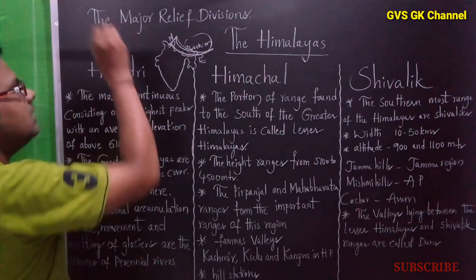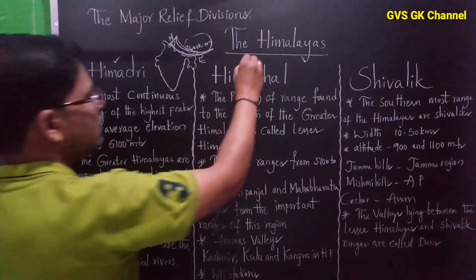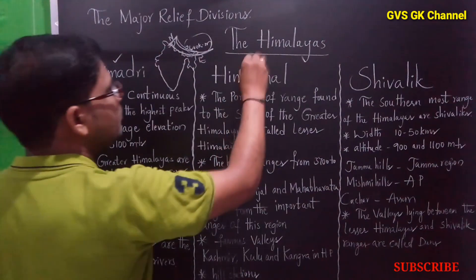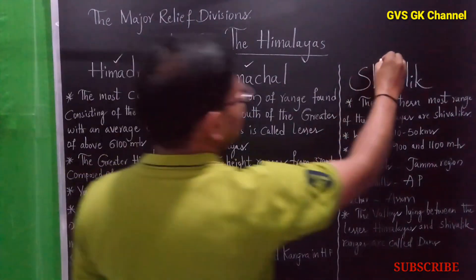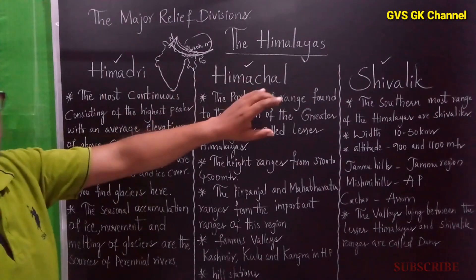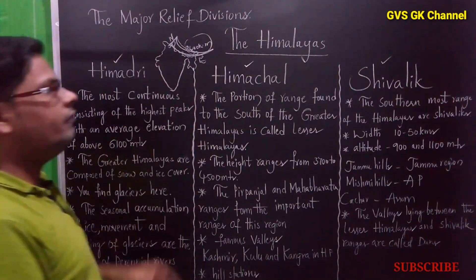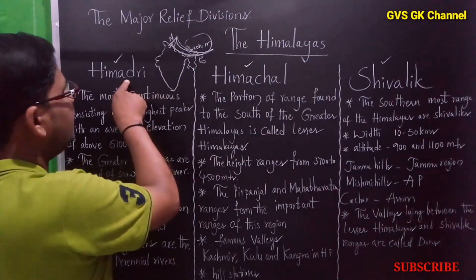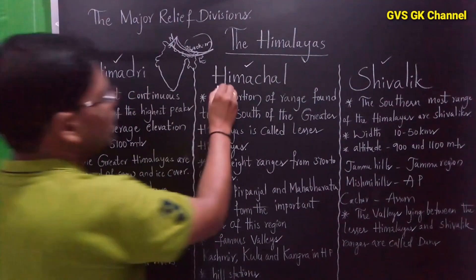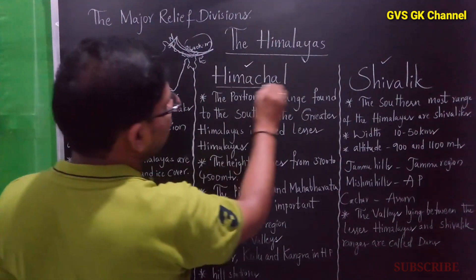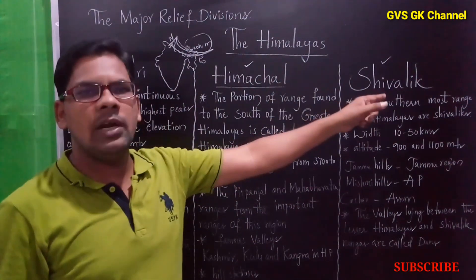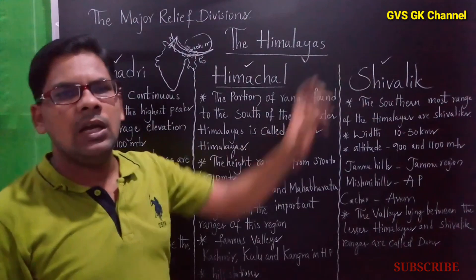What are the three ranges? The first one is Himadri, the second one is Himachal, and the third one is Shivalik. They are divided into these 3 important ranges, with different names: the Himadri range is also called the Greater Himalayas, the Himachal range is also called the Lesser Himalayas, and the Shivalik range is called the foot of the Himalayas.